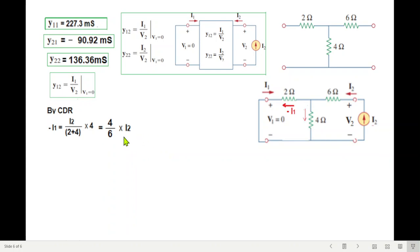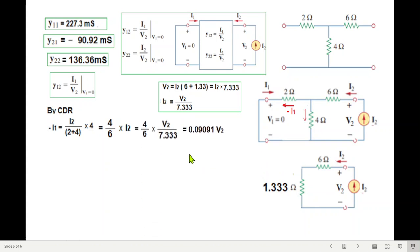Now we'll replace i2 by the value calculated earlier from this circuit, i2 in terms of v2. We'll rewrite it: i1 will be, the sign will move, so this is i1. Now we'll divide by v2, so i1 over v2 will be negative 0.09091, which can be written as negative 90.91 millisiemens. This is our y12, so y12 is negative 90.91 millisiemens.